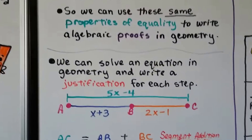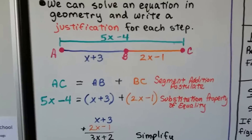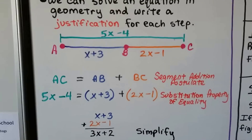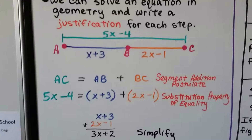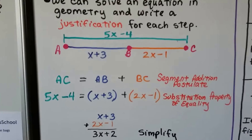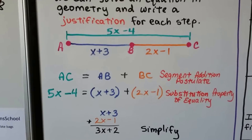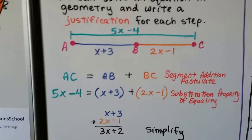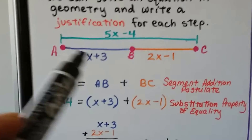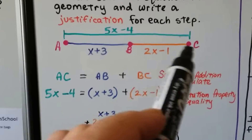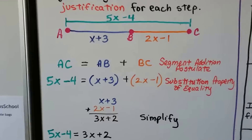We can solve an equation in geometry and write a justification for each step. Here we have points A, B, and C. Going all the way across from A to C is 5x minus 4. AB is x plus 3, and BC is 2x minus 1. We know that AC equals AB plus BC — that's the segment addition postulate, our justification.